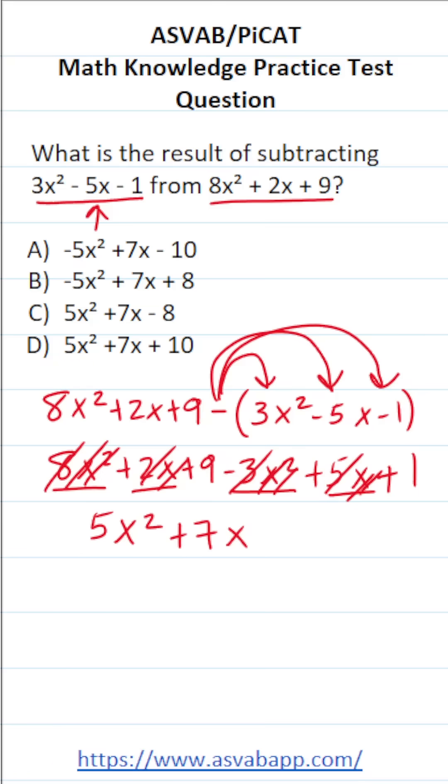And then finally, we have positive 9 and positive 1. 9 plus 1 is 10. So when we subtract these two polynomials, the result is 5x squared plus 7x plus 10.